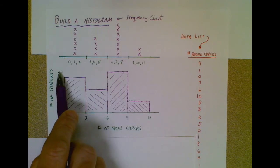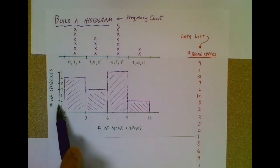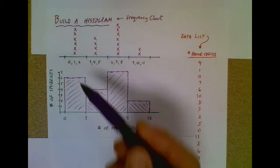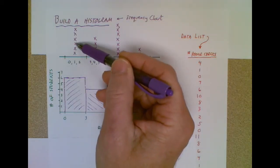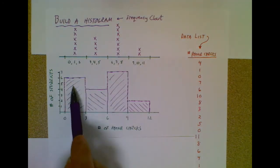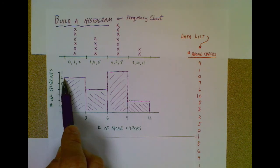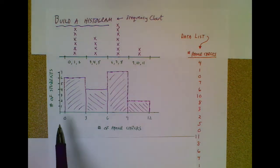I'm going to now have a y-axis along with my x-axis. The y-axis represents the number of students. So there were one, two, three, four, five, six students in this category. So my bar is going to go up to six. So I have six students who check their phone between zero and three times.